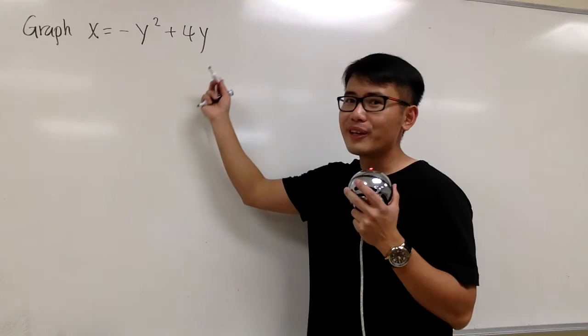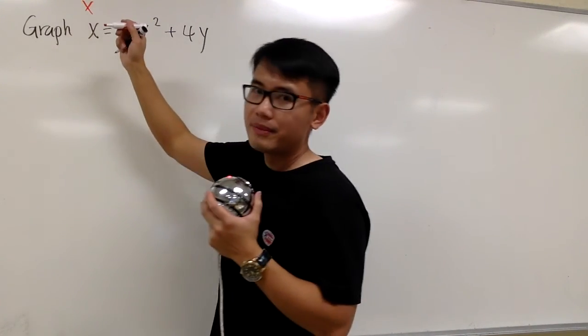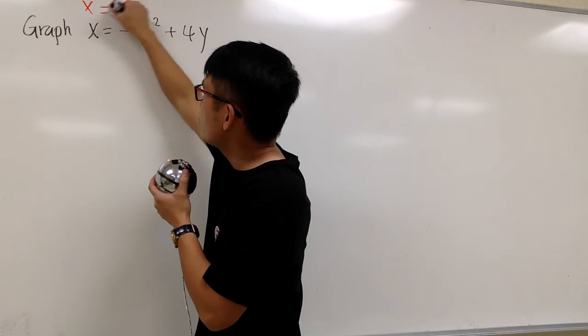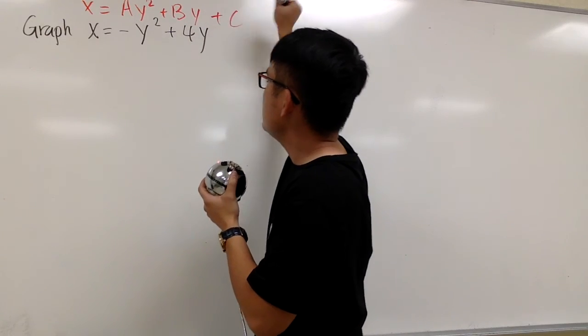Notice that this right here is in the standard form, and let me write it down for you. The standard form of the sideways parabola is x equals Ay squared plus By plus C.